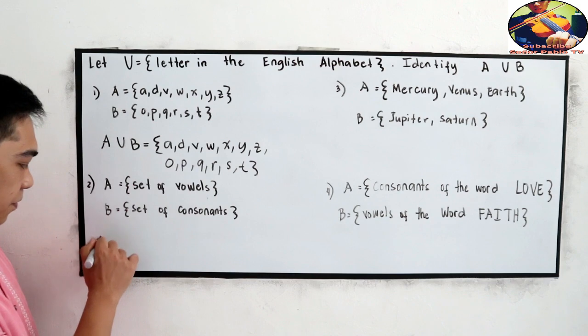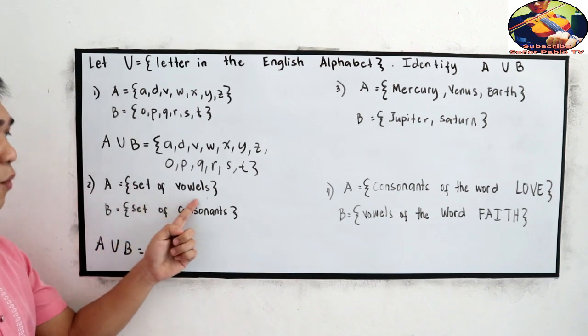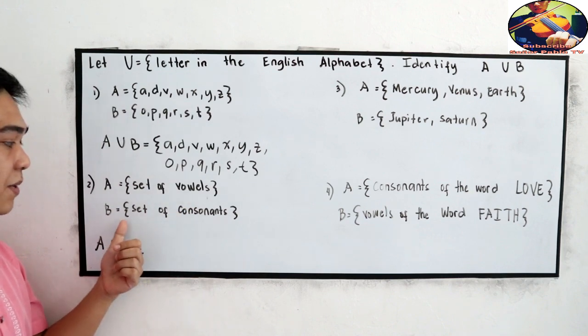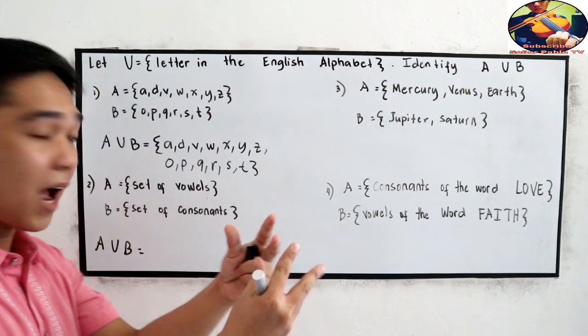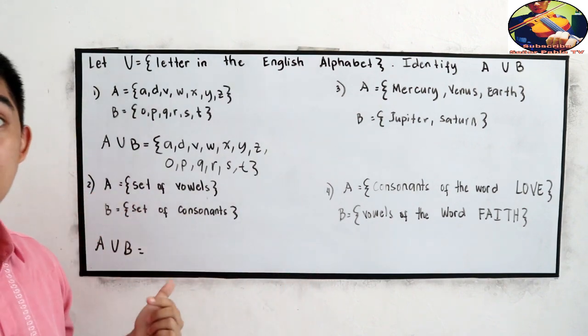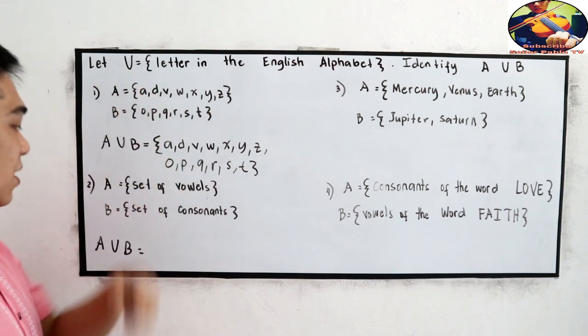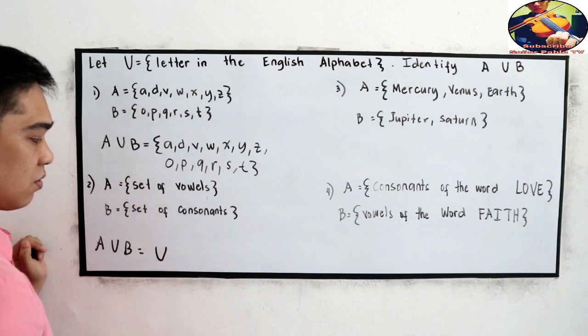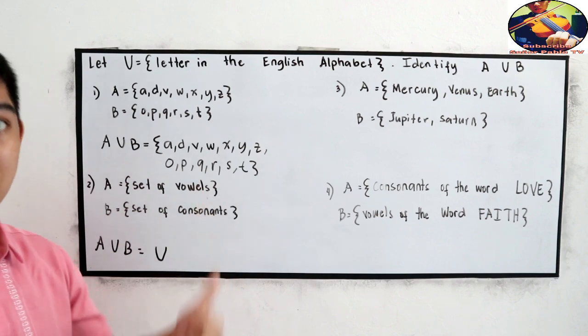Letter B, A union B, is the set of vowels. So, that is A, E, I, O, U. And letter B, set of consonants. So, if we're going to merge or combine A union B, that is also equal to our universal set. So, A union B is equal to our U, the universal set. Or you can write A to Z. That is also acceptable.